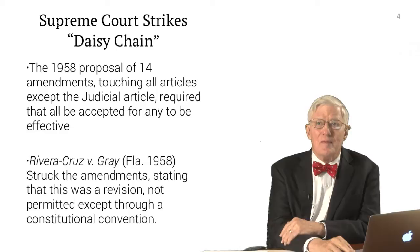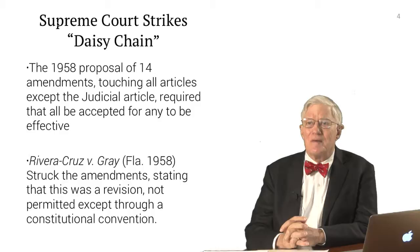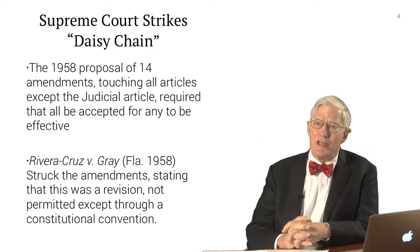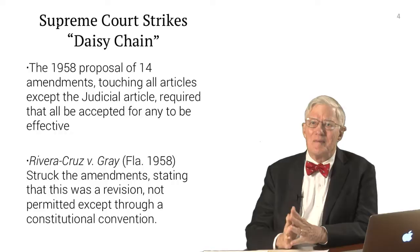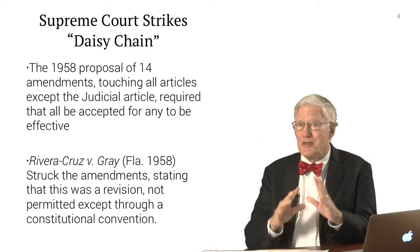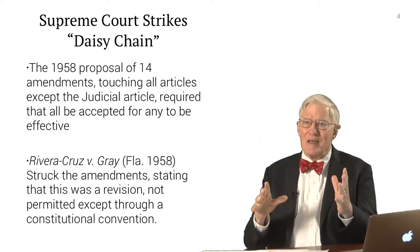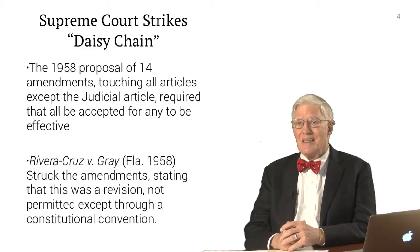Once you remember that there were a number of attempts to amend the Constitution, one of them was the so-called daisy chain attempt. Back earlier, before '68, the legislature tried to amend the Constitution. It was a terrible job, in my judgment. But they were at least attempting to clean up the Constitution, and they did this through what was called daisy chain amendments.